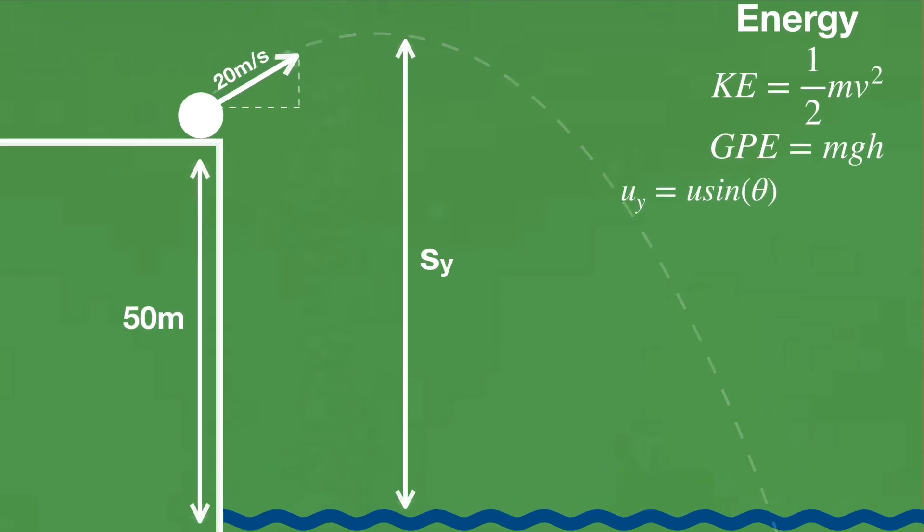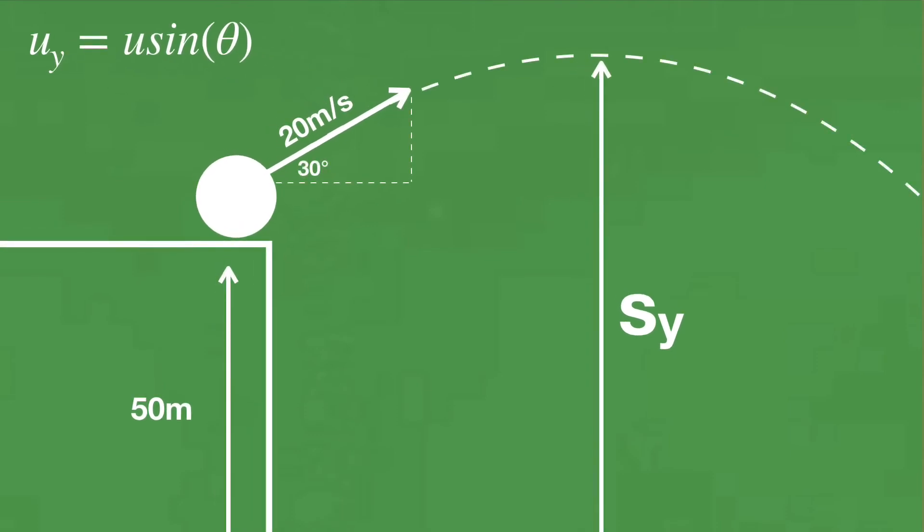As the ball is 30 degrees above the horizon, we can use trigonometry to find that the y component is 10 meters per second. Then we have to realize that the ball has no kinetic energy in the y direction when it's at its peak.